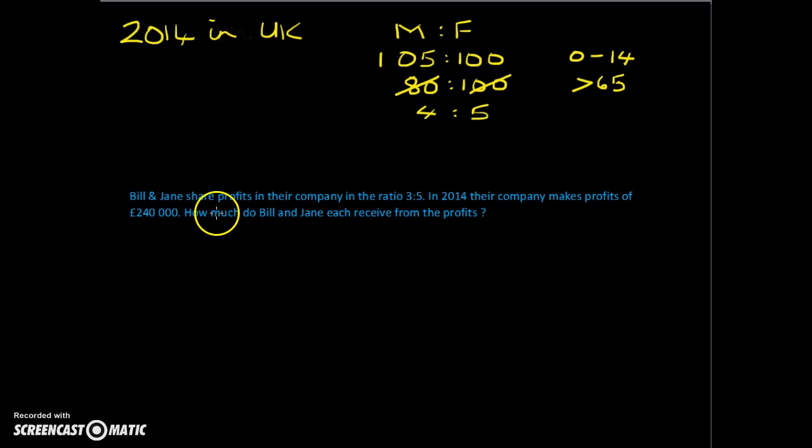Now, moving on to a question about profits. Bill and Jane share profits in their company in the ratio of 3 to 5. In 2014, their company makes a profit of £240,000. How much do Bill and Jane each receive from the profits?